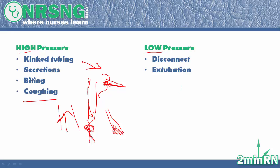Now let's talk low pressure. The ventilator is trying to push oxygen in and it senses that there is no pressure — it doesn't have any effort that it's trying to work against. The primary cause is going to be disconnection. The tube becomes disconnected from the ventilator, or where the tube goes into the patient's mouth there's a disconnection, so it's just blowing air straight out and not delivering it to the lungs.